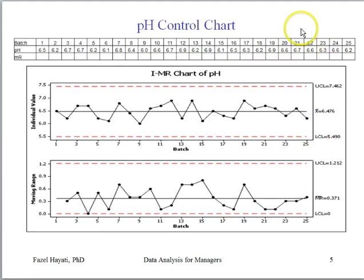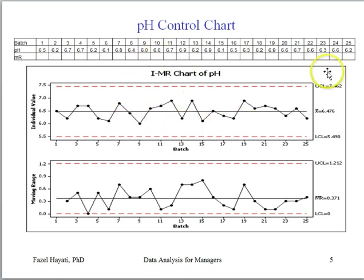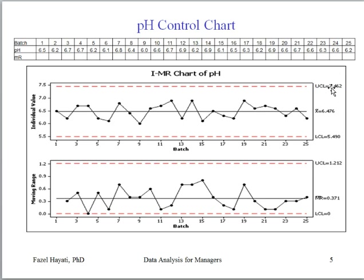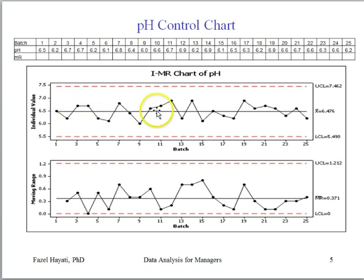Here is an example from a chemical process. A sample from 25 batches of a particular chemical has been selected and tested, and these are the pH values. As you can see, this process is also in statistical control. Based on the last 25 batches, the pH average is about 6.5, and the range of variation in pH values is between 5.5 to 7.5. Any improvement to this system comes from changing and improving the system that produces this range of variability.